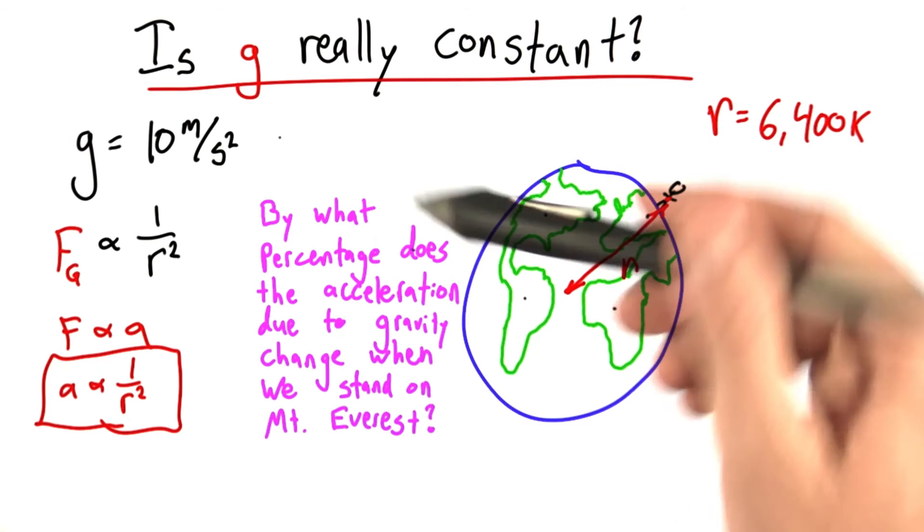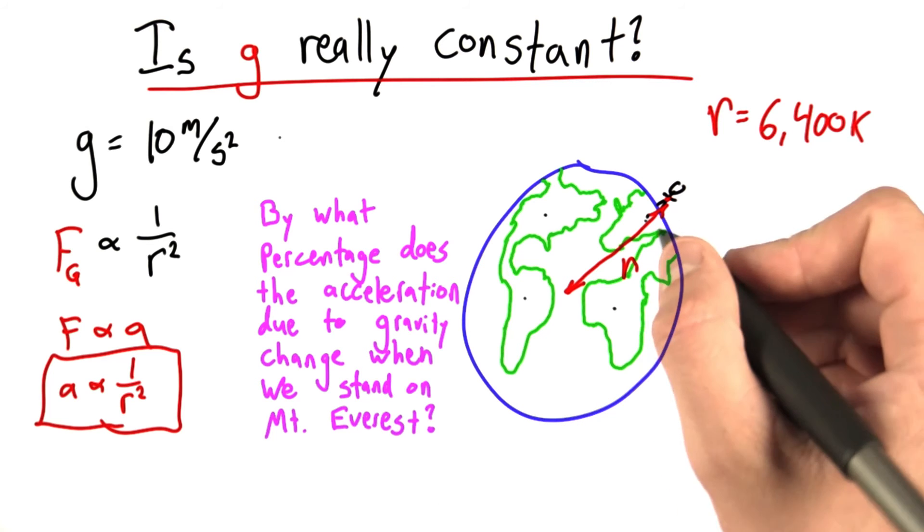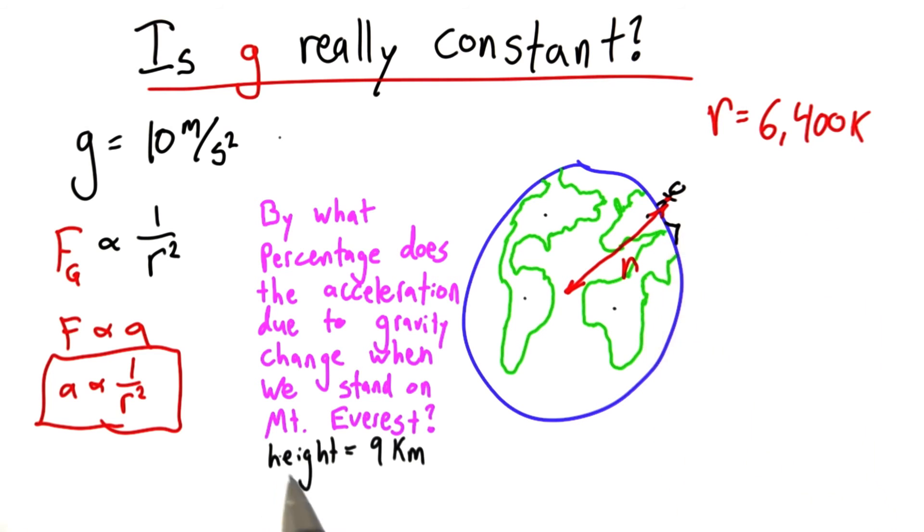By what percentage does the acceleration due to gravity change when we stand on Mount Everest? Now Mount Everest would be somewhere over here. And the height of Mount Everest is about equal to 9 kilometers. This is a tricky question, but try to think back about what you know about proportionality to give us an answer.